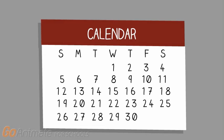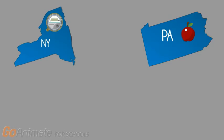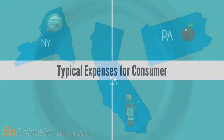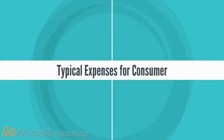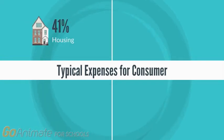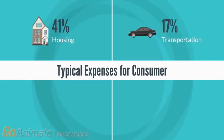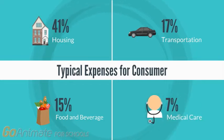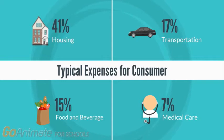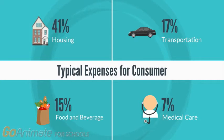Each month, the BLS conducts surveys by sending employees into stores in 38 geographical locations to gather and input price information on over 8,000 goods. The BLS estimates prices on everything from apples in Pennsylvania, electricity in New York, and gasoline in California. In addition to inputting prices, the BLS survey estimates how each good and service affects a typical consumer. Once they do this, they attach a weight to the price of each good in the consumer's basket. For example, the typical consumer spends 41% of his or her budget on housing, so housing prices receive 41% of the total weight in the basket of goods.